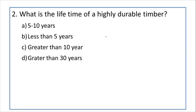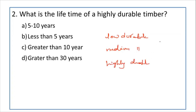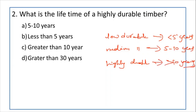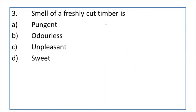Based on the life of the timber, timber is classified into three types: low durable, medium durable, and highly durable. Low durable timber has a life of less than 5 years, medium durable is 5 to 10 years, and highly durable timber has a life of greater than 10 years. So the answer is greater than 10 years.